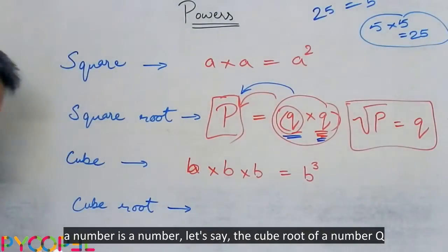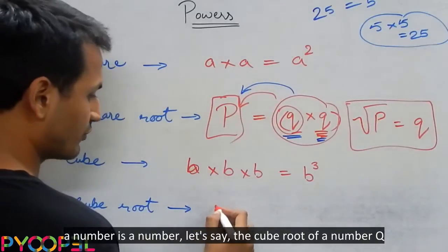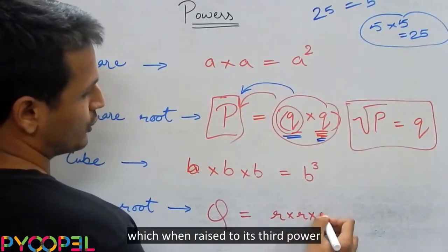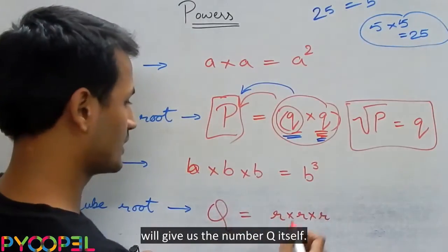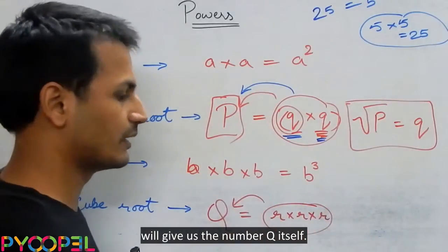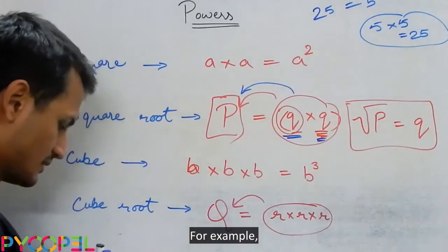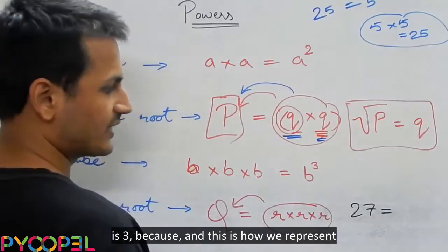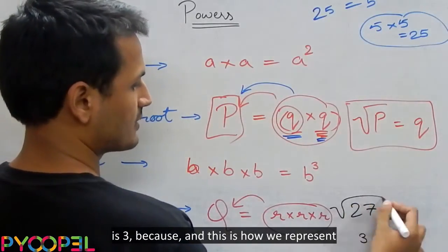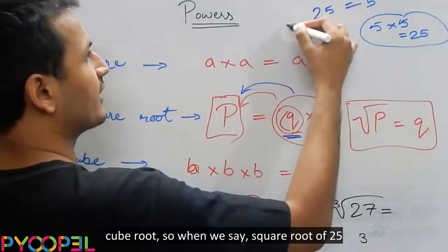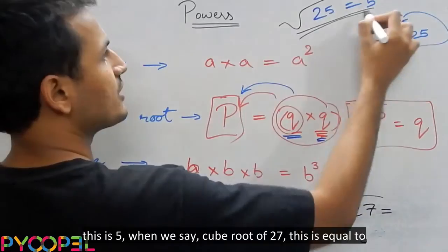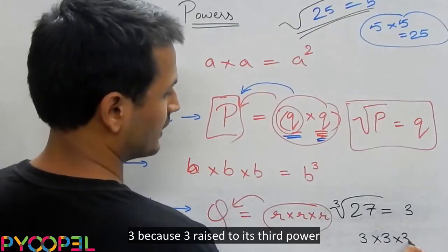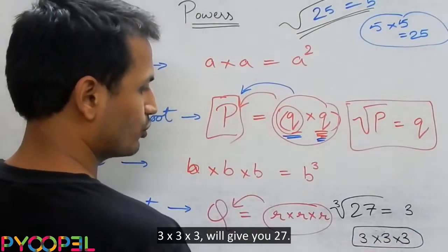Similarly, the cube root of a number — let's say the cube root of number Q — is a number which, when raised to its third power, will give us the number Q itself. For example, take the number 27. The cube root of 27 is 3, and this is how we represent cube root. So when we say cube root of 27, this is equal to 3 because 3 raised to its third power — 3 into 3 into 3 — will give you 27.